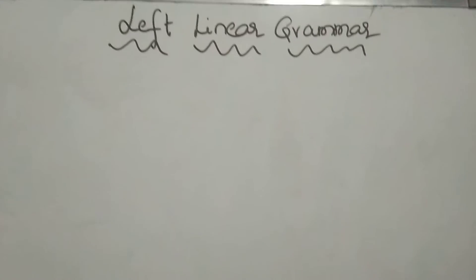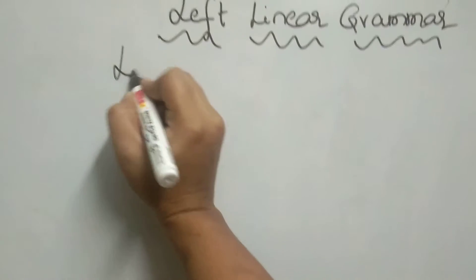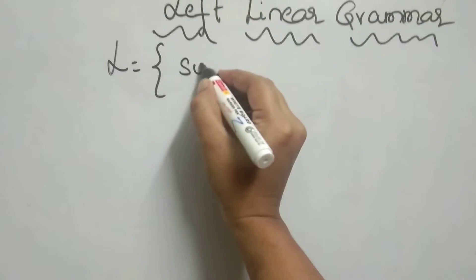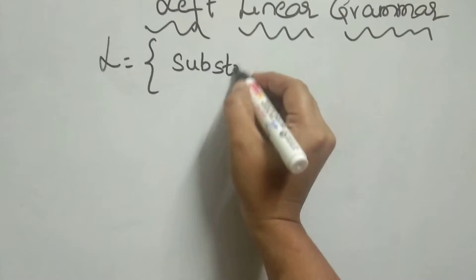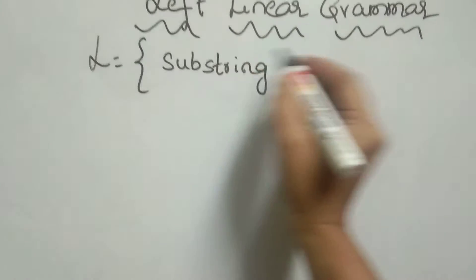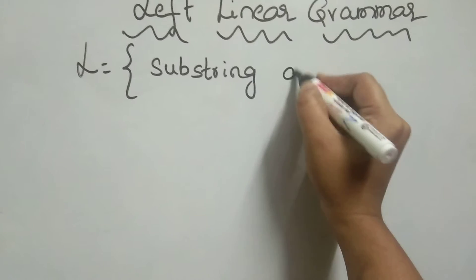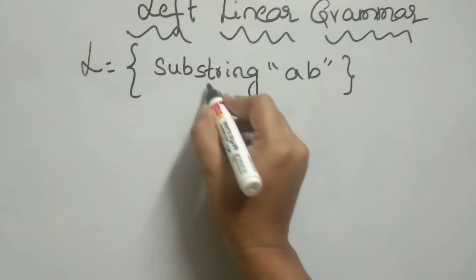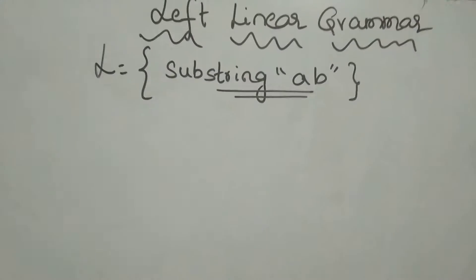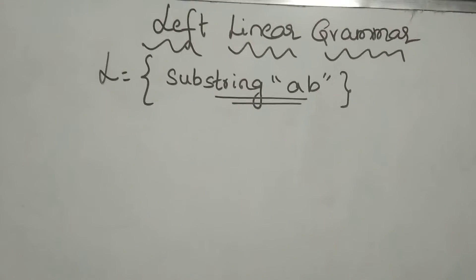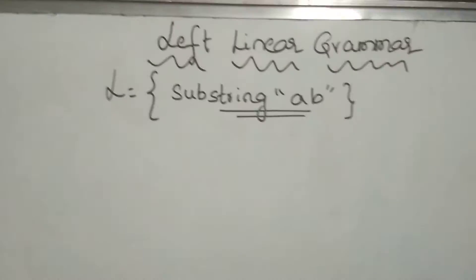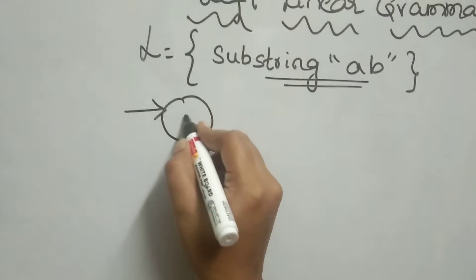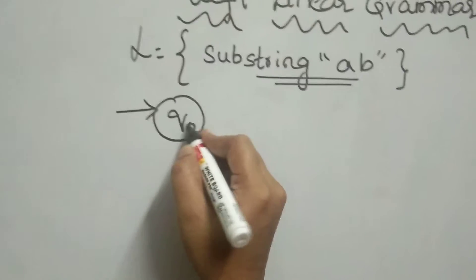First, let us take a language which is the set of all strings which has a substring 'ab'. I already explained the finite automata for substring 'ab' for right linear grammar. First we will generate a finite automata for this.